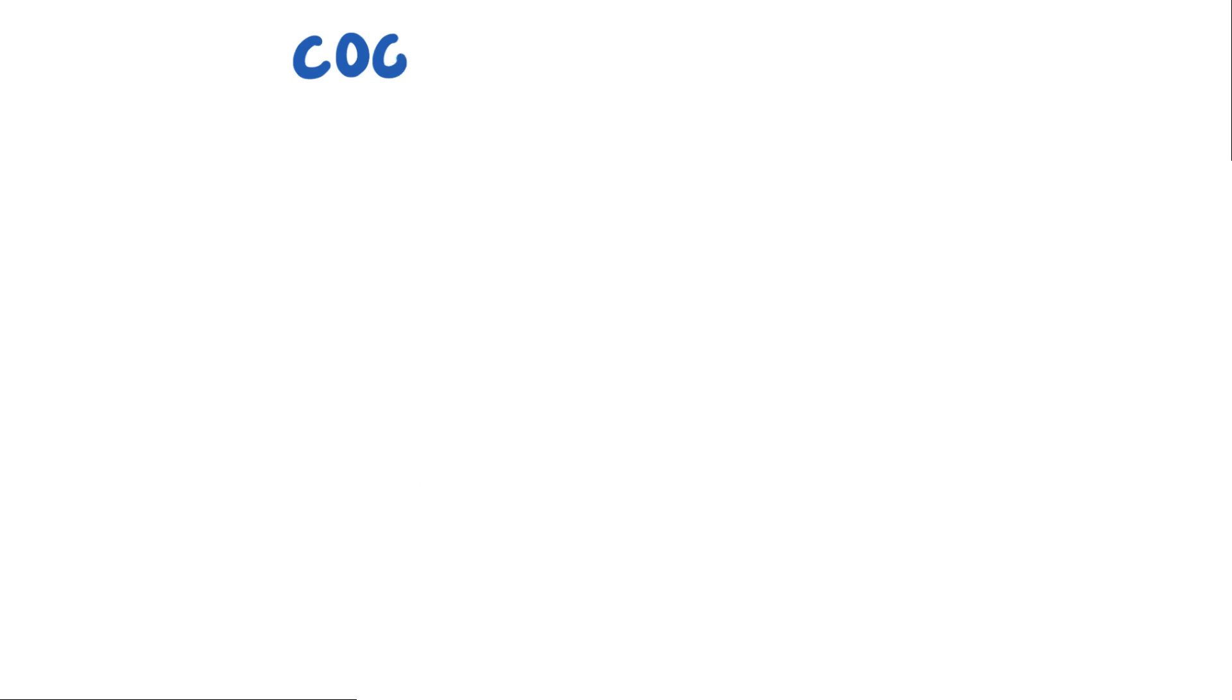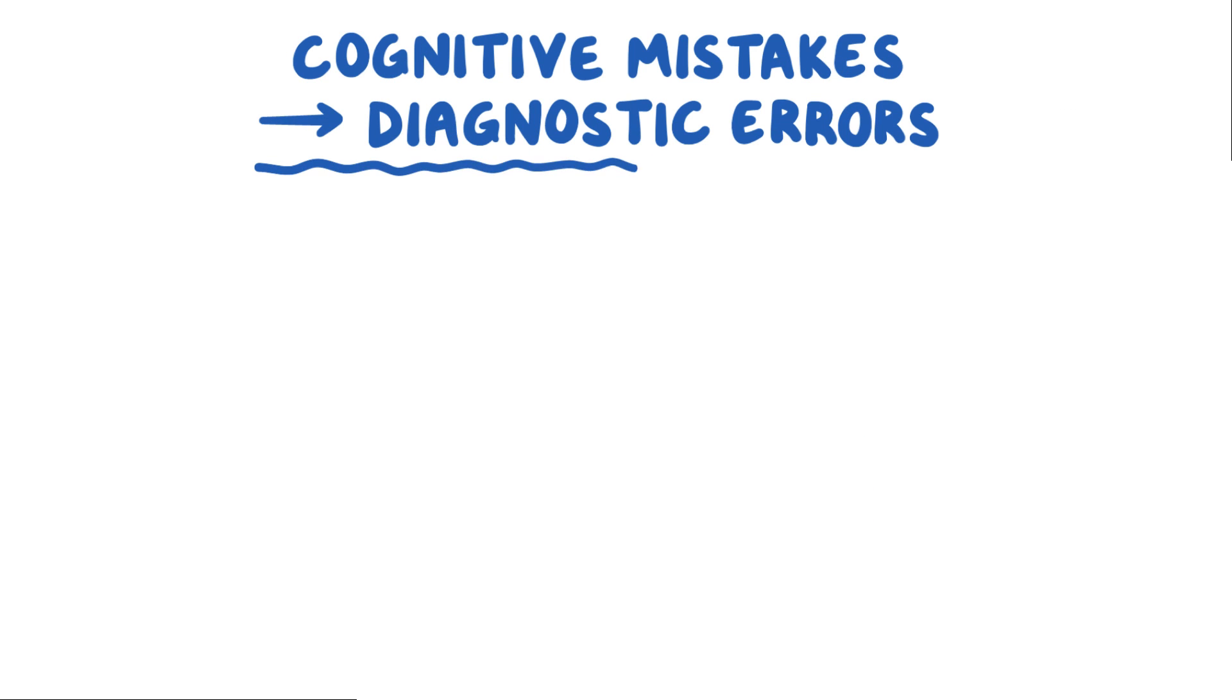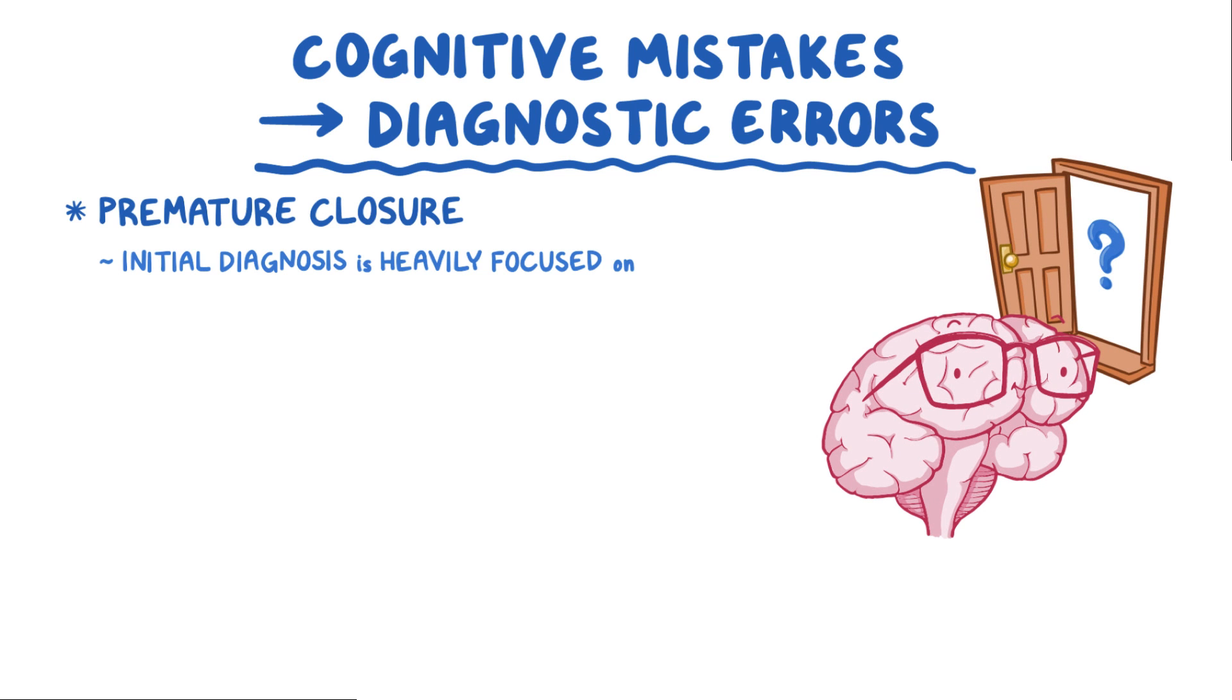There are several types of cognitive mistakes that can lead to diagnostic errors. The first is called premature closure. That is when the initial diagnosis is heavily focused on, and the mind becomes closed to other possibilities.